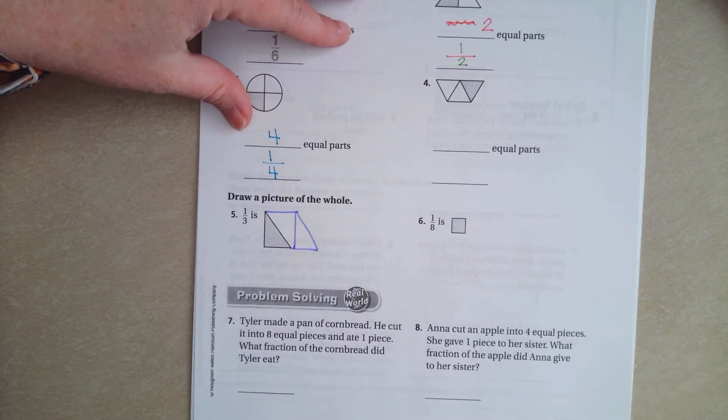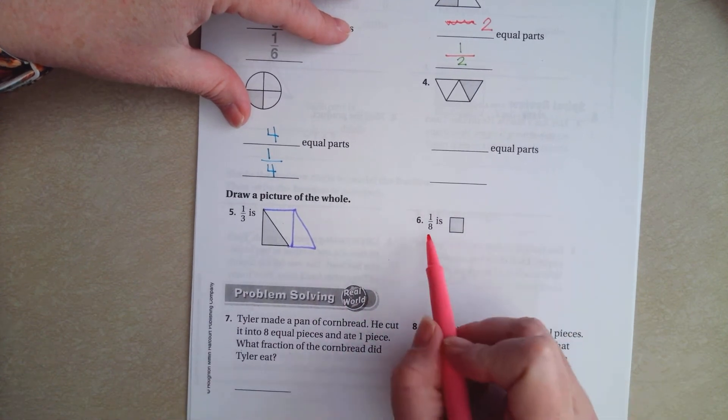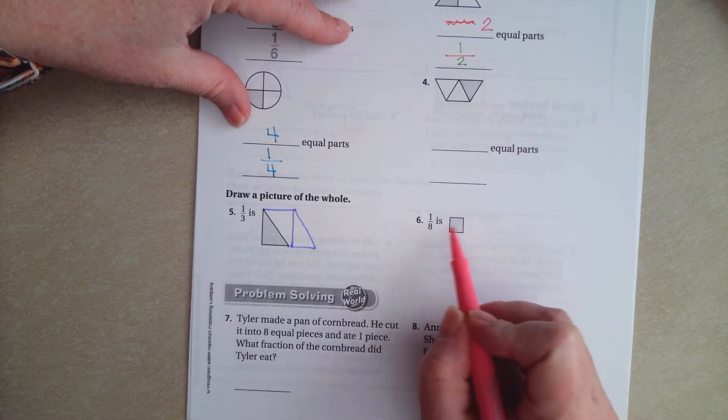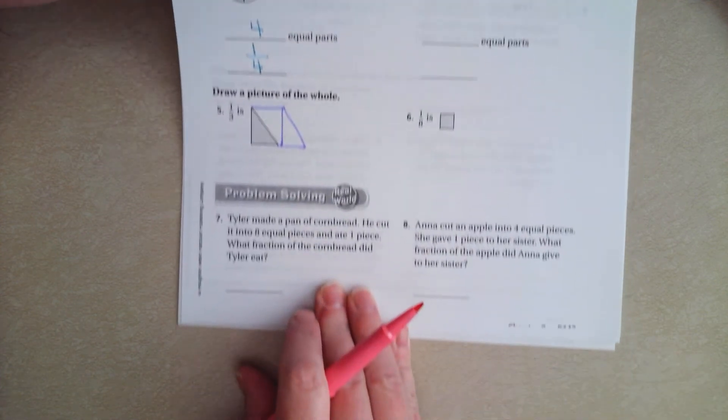You guys try and do that with number six. You've got to have eight equal parts. So, eight parts that are about this size.